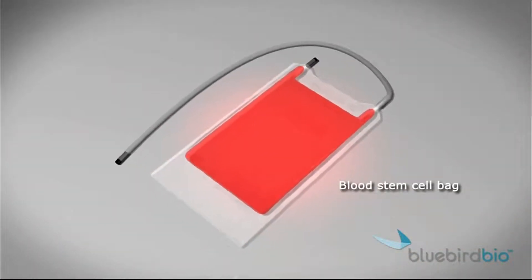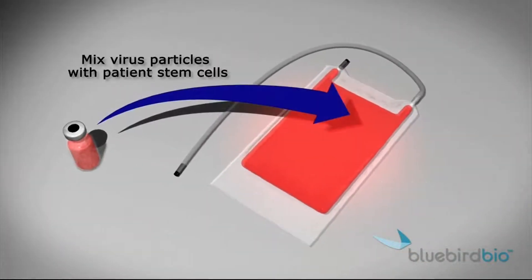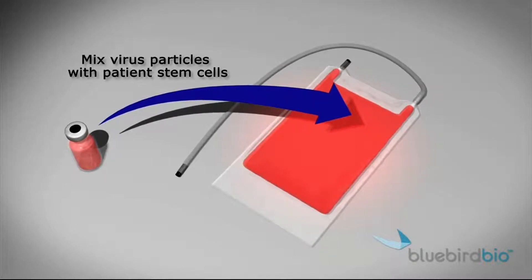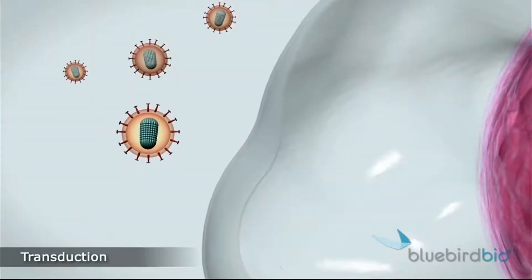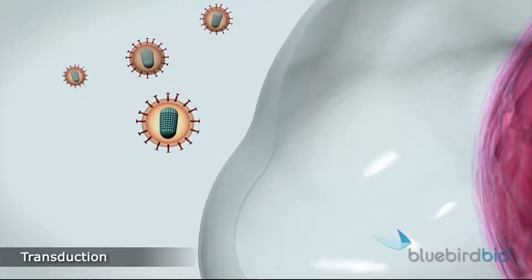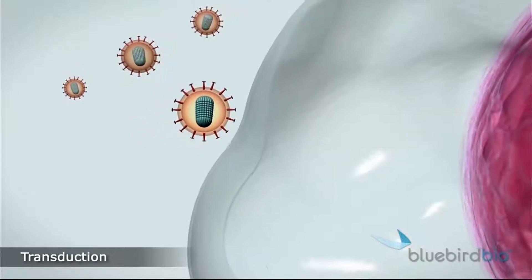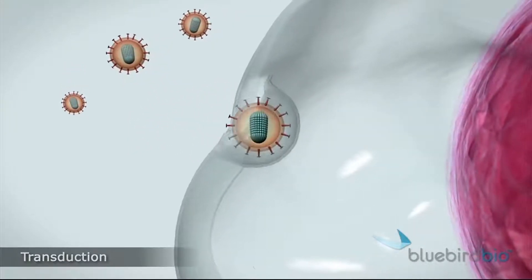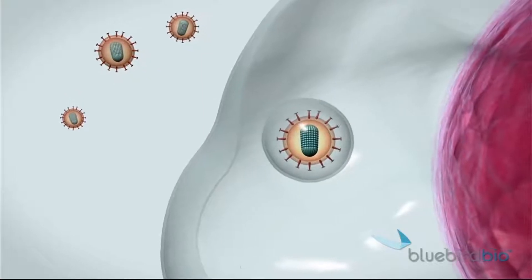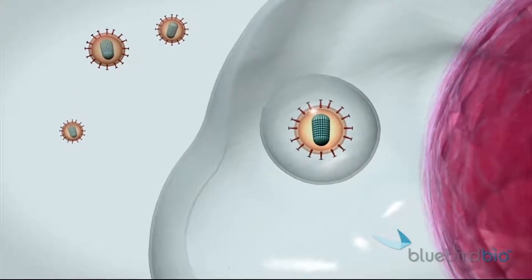Next step: virus meets blood stem cell in the bag outside the body. So the virus never goes in the body. What it then knows to do is to infect the cells — infect as many cells as we can in that bag.